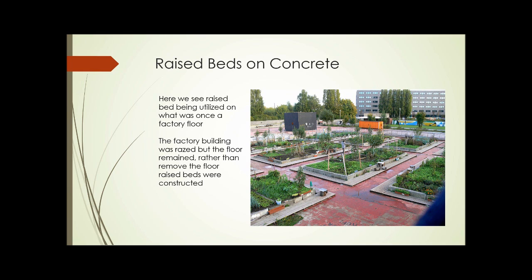Here we see a paved bit of ground that has a very large and active urban agriculture operation on it. This was once a factory floor — the factory was knocked down, but the floor wasn't taken out. The solution here was to install raised beds over the entire area, and as you can see, it's a relatively large operation.